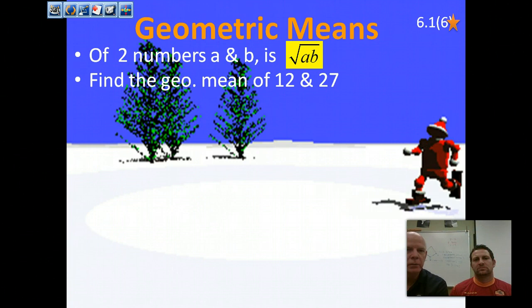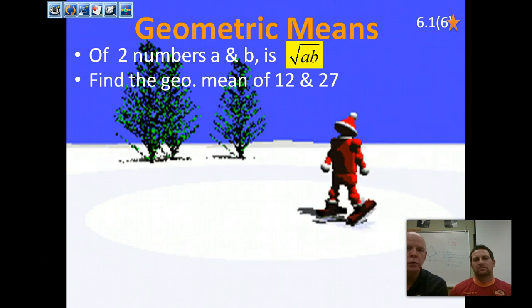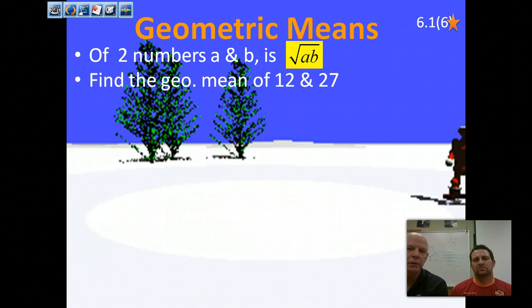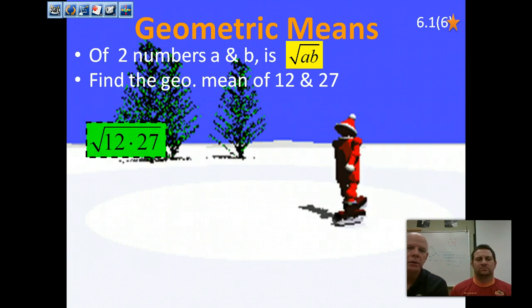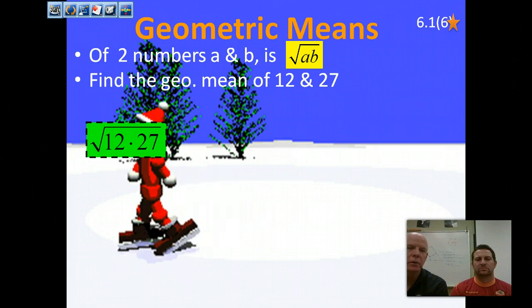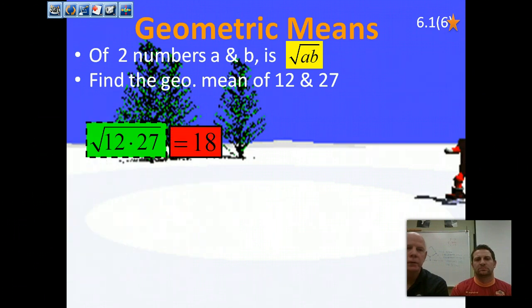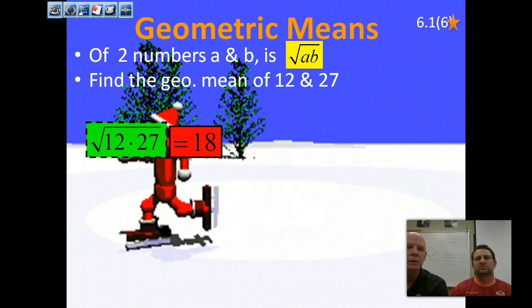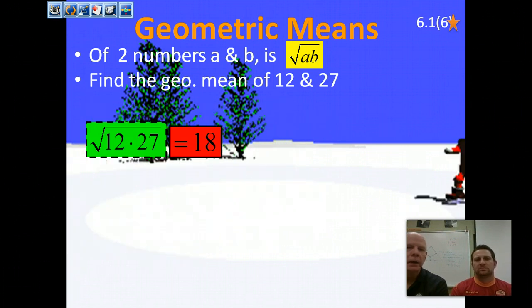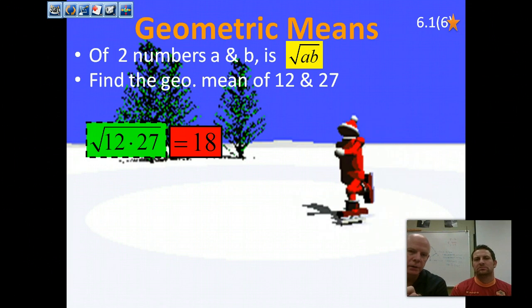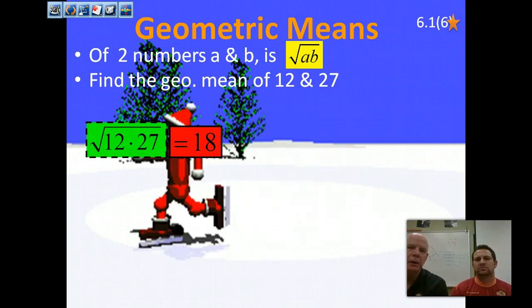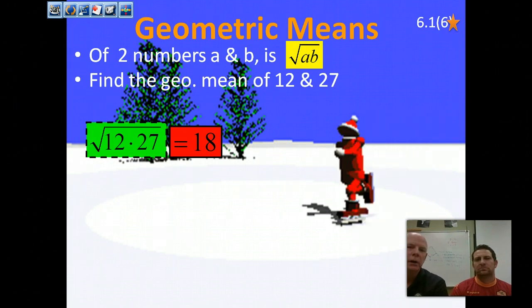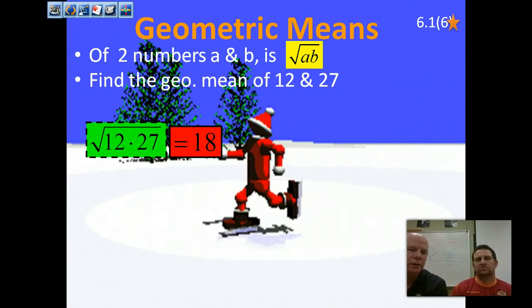Example: find the geometric mean of 12 and 27. Multiply them together and take the square root. The square root of 12 times 27 is the square root of 324, which is 18. It's basically a specific proportion between these numbers — 12 to 18 and 18 to 27 end up being in the same ratio. We'll get to more on that later.